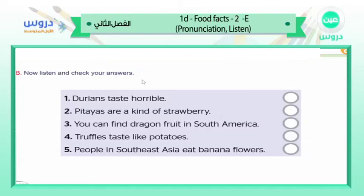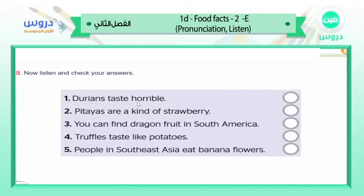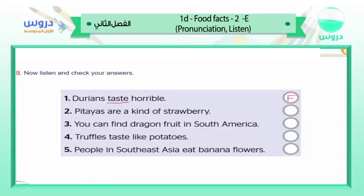We have five sentences — are they true or false? Number one: 'Durians taste horrible.' Is it true or false? This is false. They smell horrible but they taste very good — the smell is terrible but the taste is fantastic.